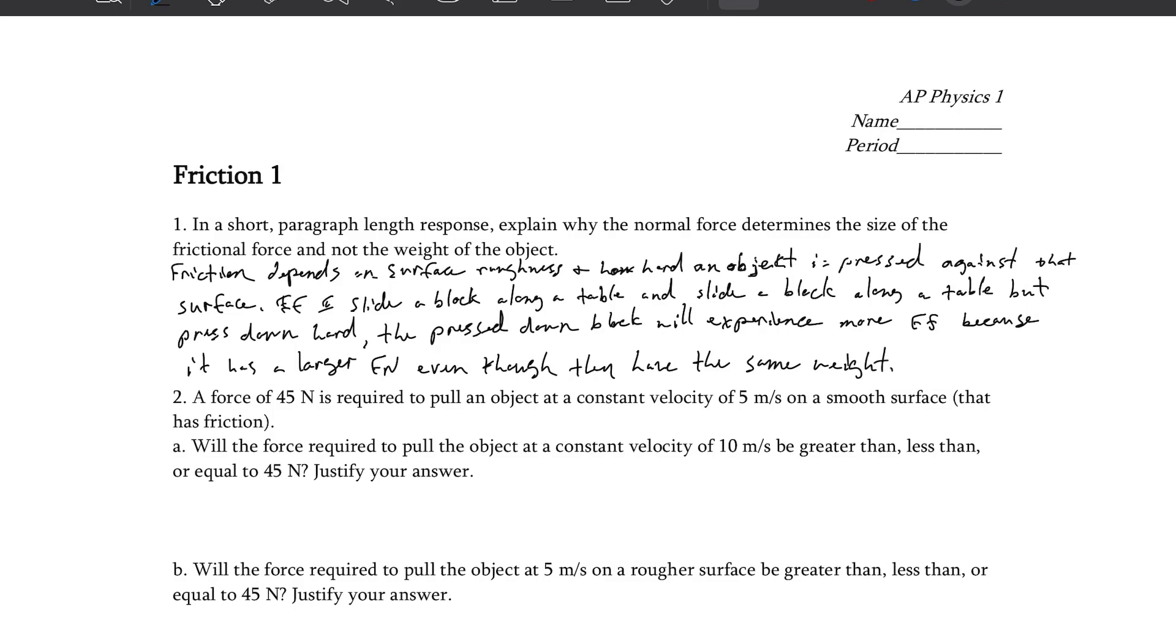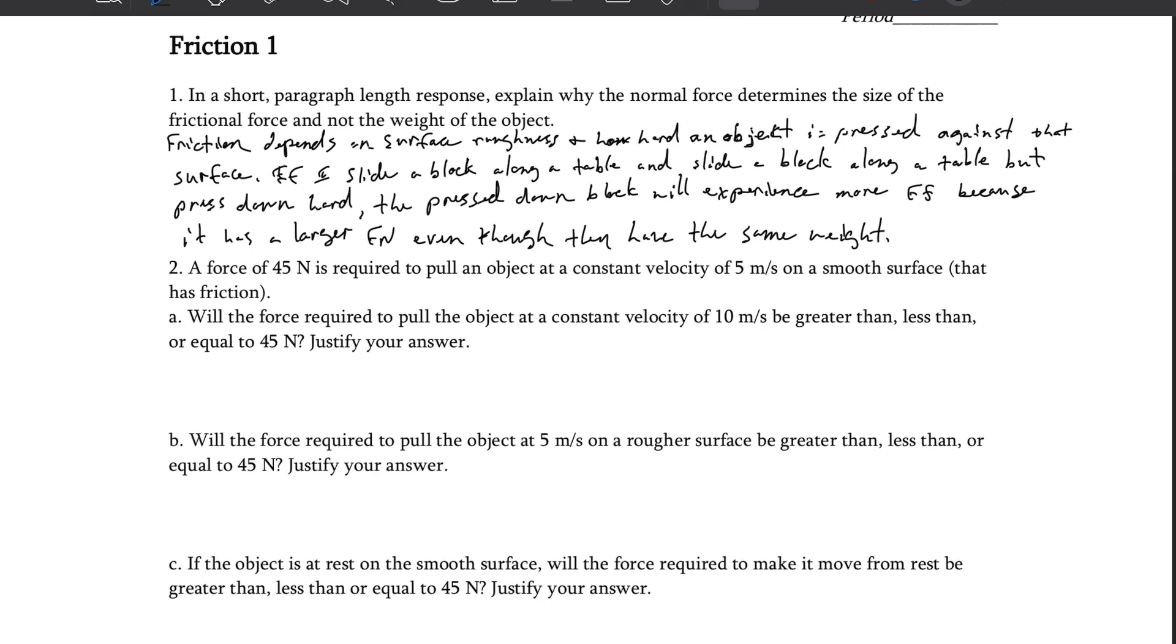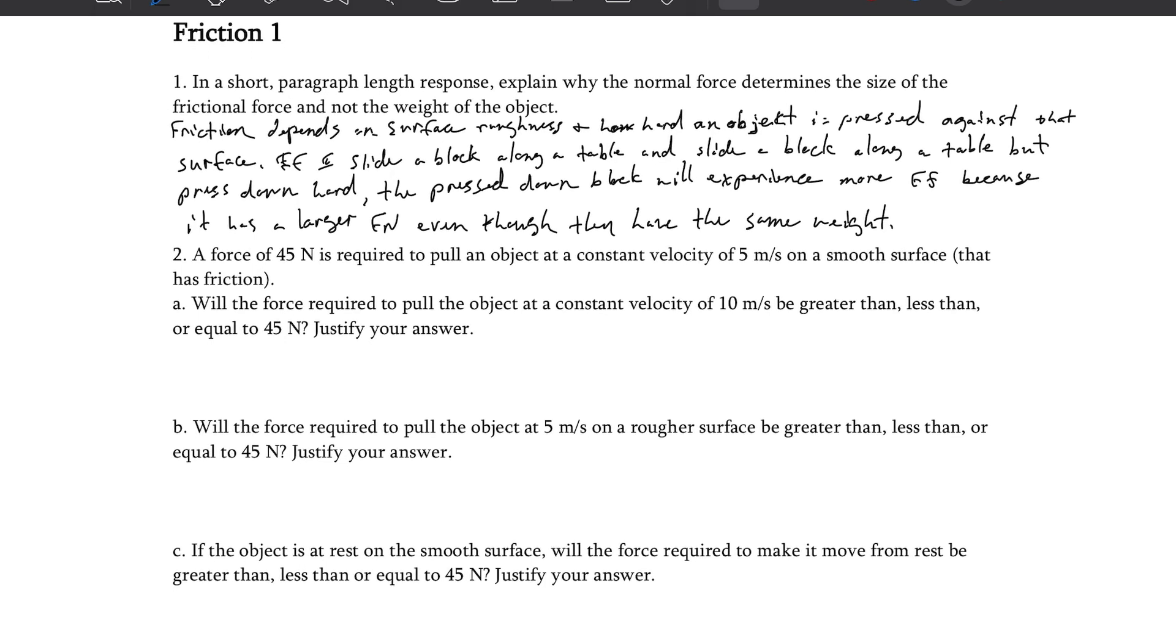We have a 45 newton force that pulls an object at constant velocity. Constant velocity means balanced forces, net force is zero, acceleration is zero, equilibrium. So if it's at constant velocity, at 45 to the right means there's 45 to the left. So the force of friction would also be 45.